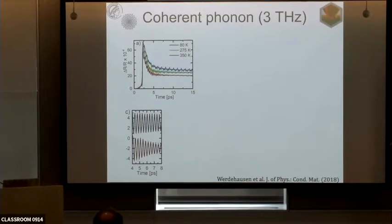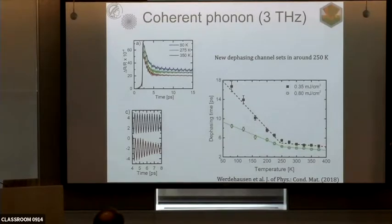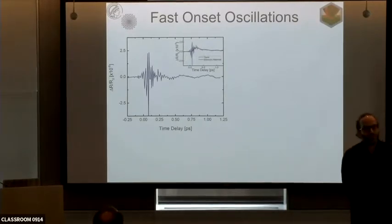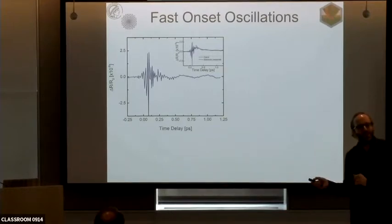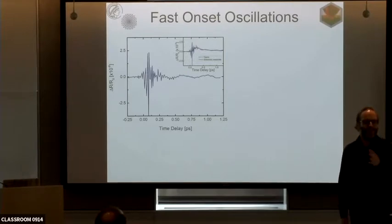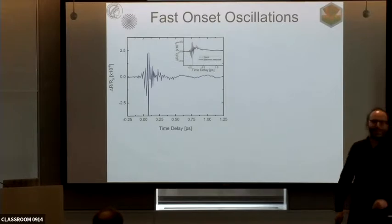Looking at coherent phonon oscillations, we see up to three phonons — at one, two, and three terahertz — that interfere. Extracting them by subtracting the electronic background, we see the dephasing times of the three-terahertz coherent phonon also show new dephasing channels setting in around 250 K. These are three distinct phonons that interfere, confirmed because they are at different frequencies and gradually shift in phase.